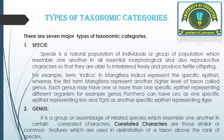Taxonomy categories are divided into seven major types. The first one is species. Species is a natural population in which organisms resemble one another and they are also reproductive in nature — they can interbreed freely and produce fertile offspring. For example, Mangifera indica and Panthera tigris. The term 'indica' in Mangifera indica represents the specific epithet, which is the second name in a species. Each species has one specific epithet and one generic name.